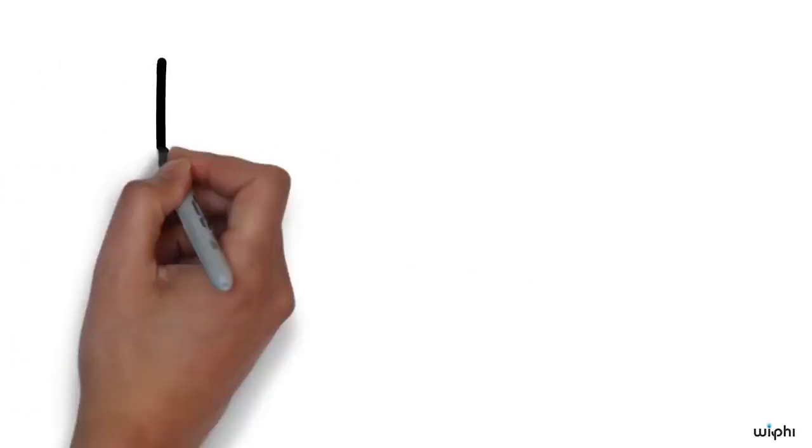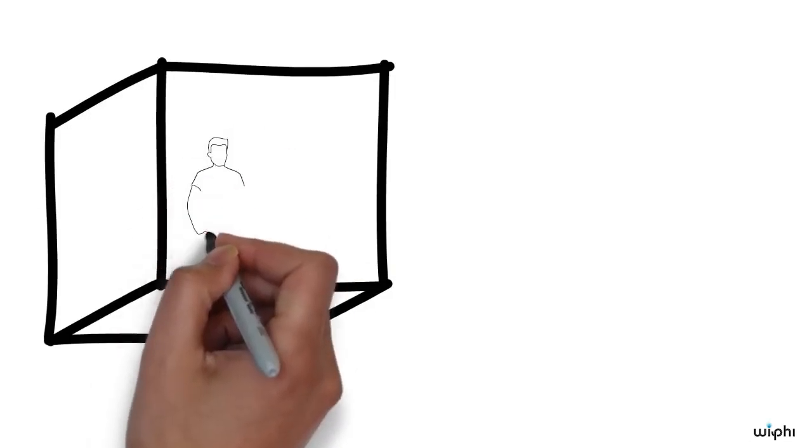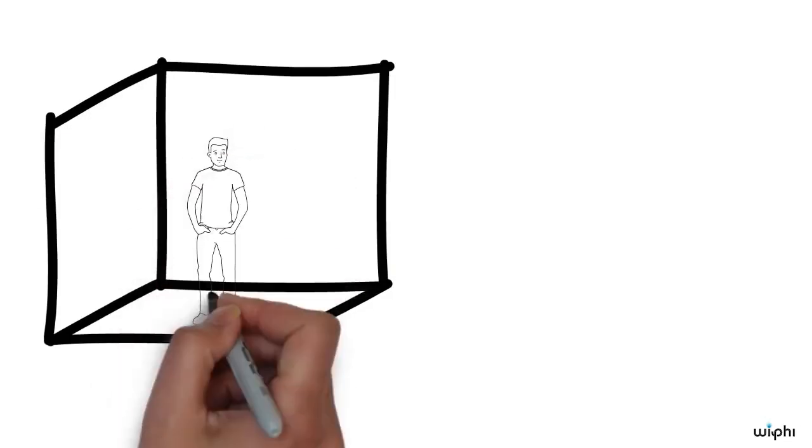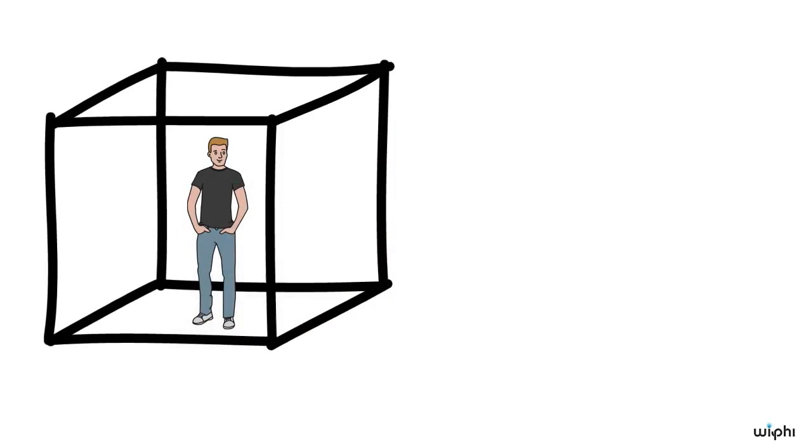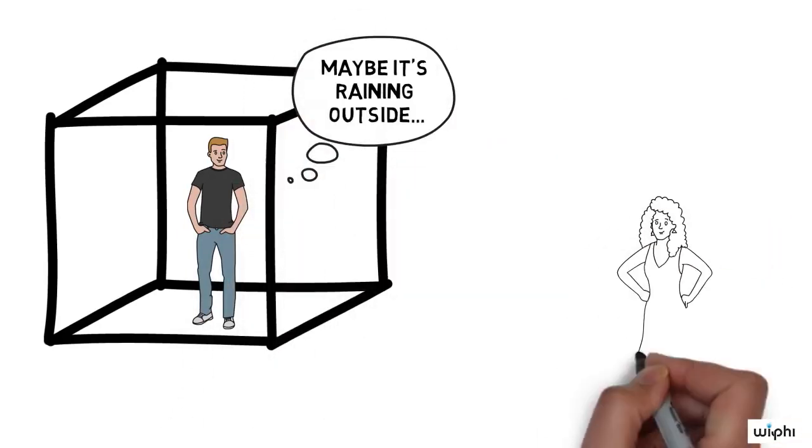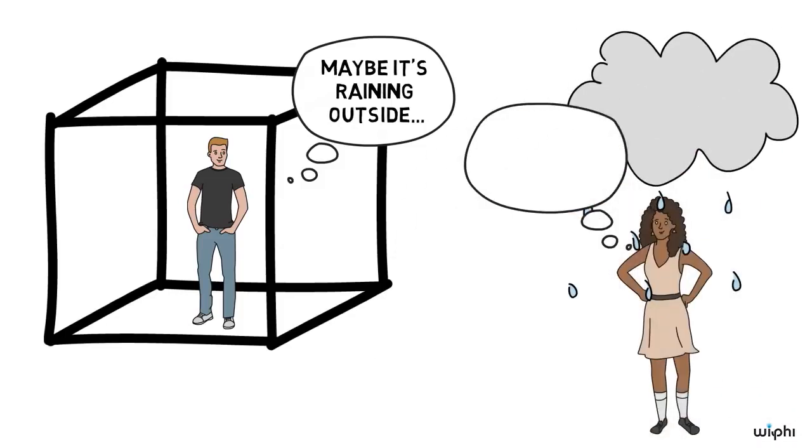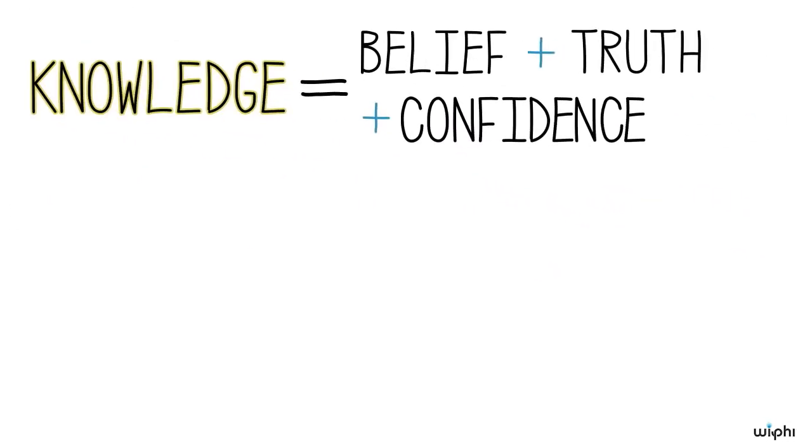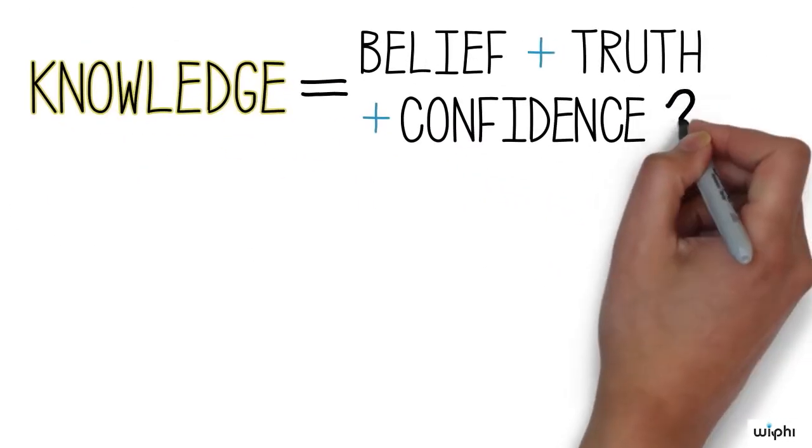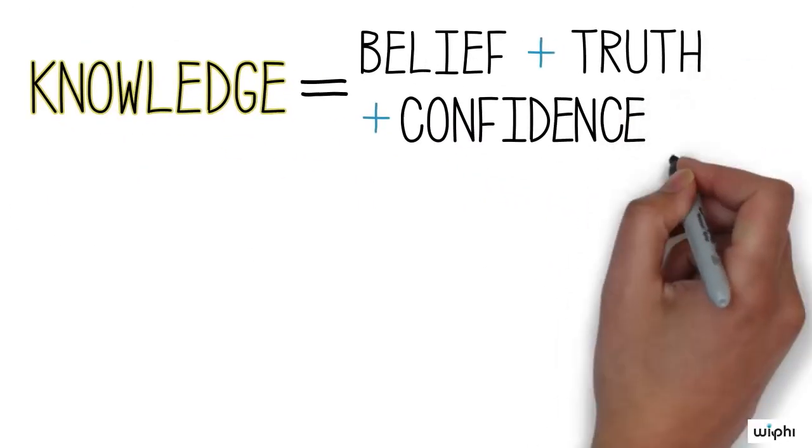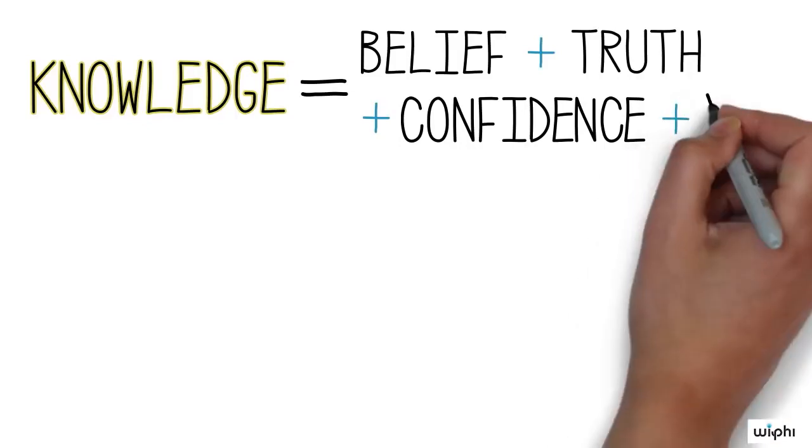Beyond truth, another key feature of knowledge is confidence. Let's suppose that Pierre is in a windowless room and he's been there for an hour. He could suspect that it's still raining outside even if he's not totally sure. But if Alice knows that it's raining, she has no doubt. She's confident. So, is confident belief in a truth enough for knowing? Apparently not. There's at least one more thing we need.